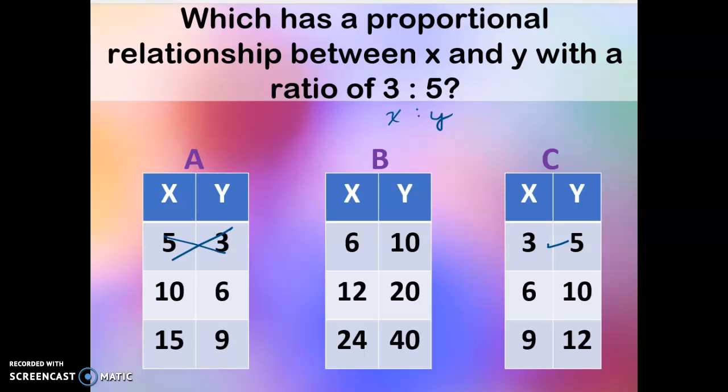So C we have 3 to 5. On the second row, 3 times 2 is 6, 5 times 2 is 10. That's correct. 3 times 3 is 9, so 5 times 3 should be 15. That's incorrect.